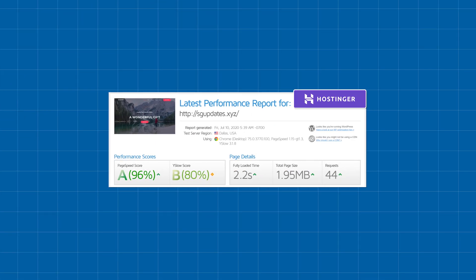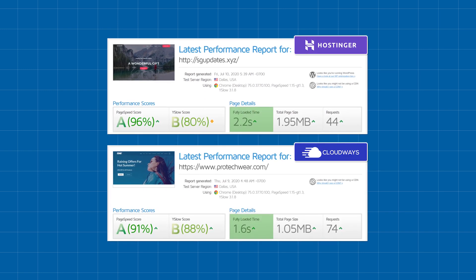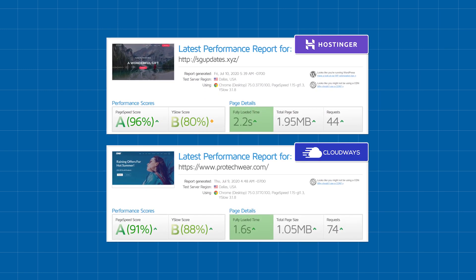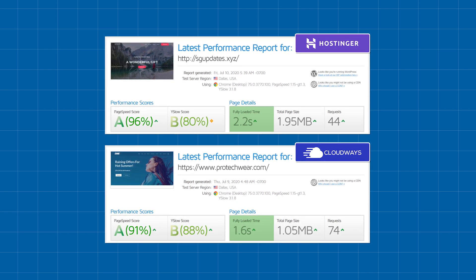If we would look at the performance that Hostinger is offering, the cloud hosting plan is around a full second slower than the Cloudways hosting plan. But 2.2 seconds is still an extremely fast result.